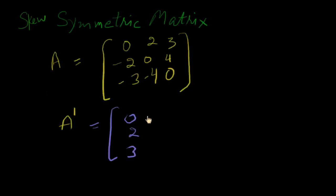Minus 2, 0, 4. This is a row, third row. And we are converting into third column. Minus 3, minus 4, 0. Minus 3, minus 4, 0.